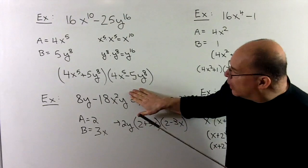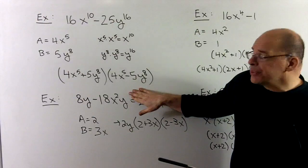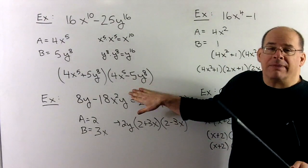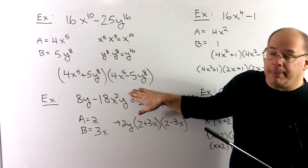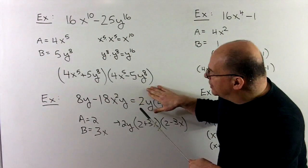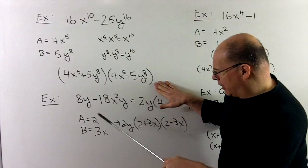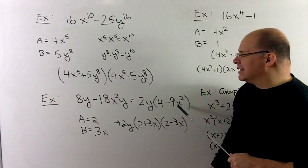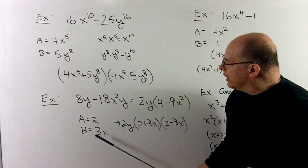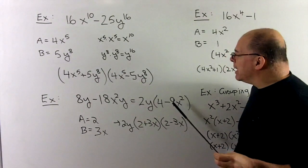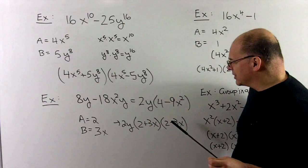Next: 8y − 18x²y. This doesn't look immediately like it has anything to do with squares, but remember — our first step is always to look for a greatest common factor. We have 8 and 18, so we bring out a 2; we have y and y, so we bring out a y. That gives GCF = 2y, leaving 4 − 9x². Now difference of two squares applies: 2 squares to 4, 3x squares to 9x², giving the factorization 2y(2 + 3x)(2 − 3x).